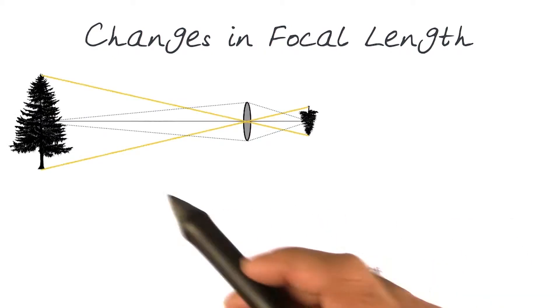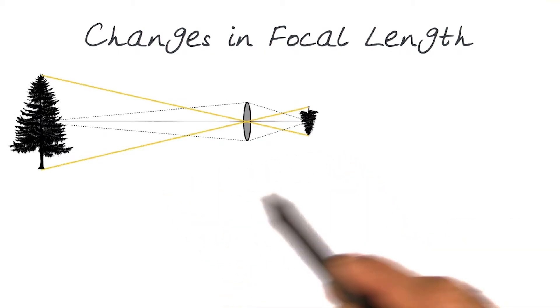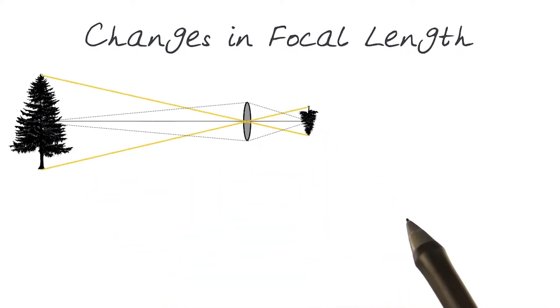Let's look at examples of what happens when we change the lens to one with a different focal length. Let's look at the example we've looked at before: a tree, a lens, and an image formed by the lens.